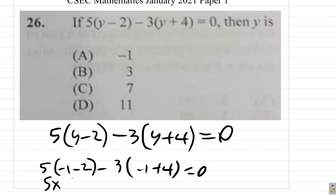This is 5 times negative 1 minus 2 is negative 3. Minus 3 times negative 1 plus 4 is what? 3. So, this is 5 by negative 3, negative 15 minus 3, 3 is 9. No, this is not 0 at all. But, we see that this couldn't work. It's not negative 1.